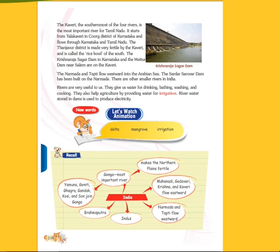Rivers are very useful to us. They give us water for drinking, bathing, washing, and cooking. They also help agriculture by providing water for irrigation. River water stored in dams is used to produce electricity. We get electricity from rivers.